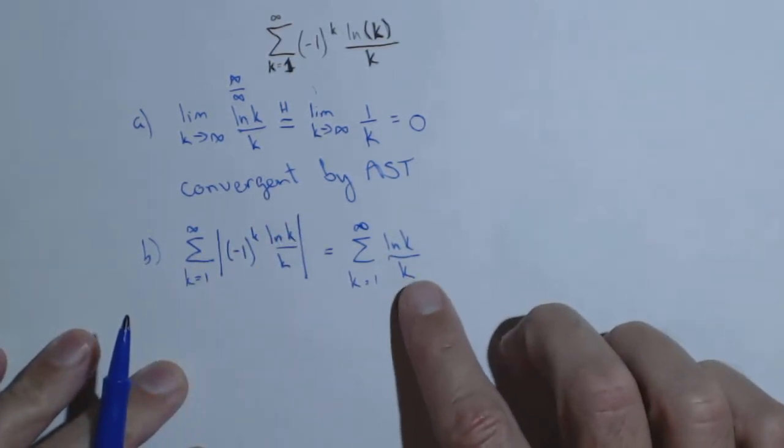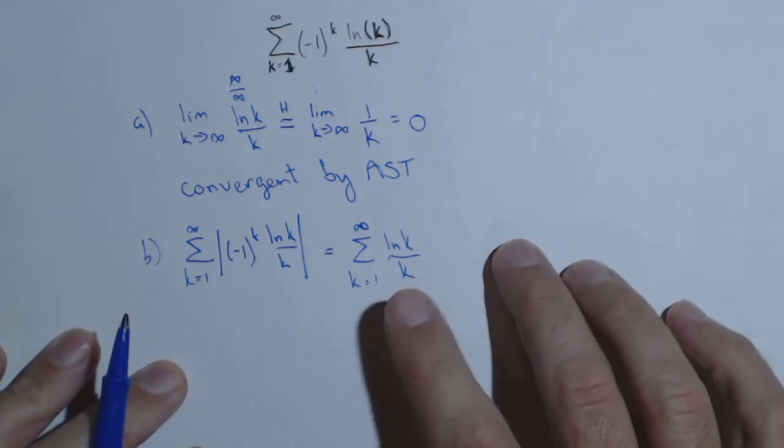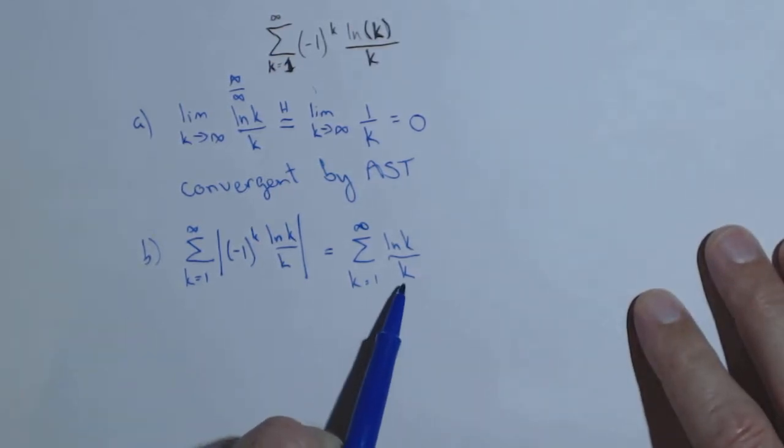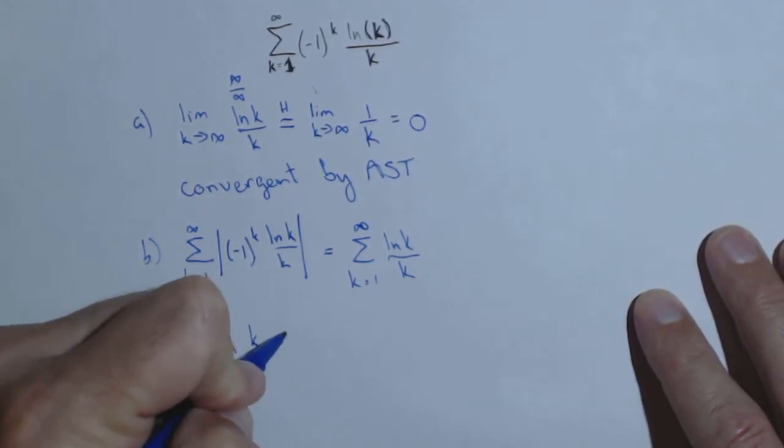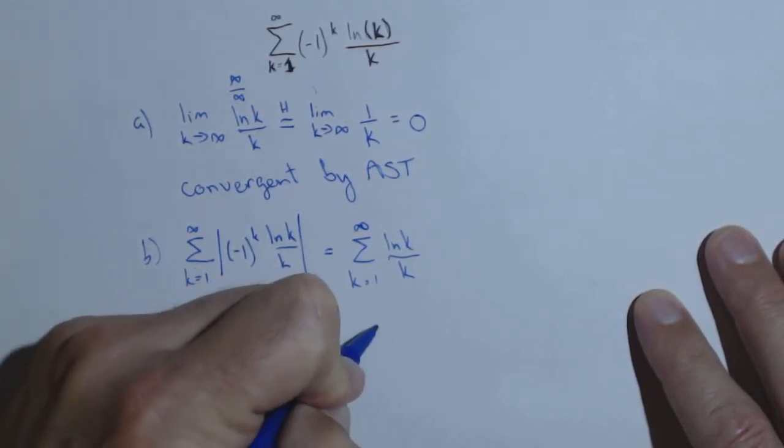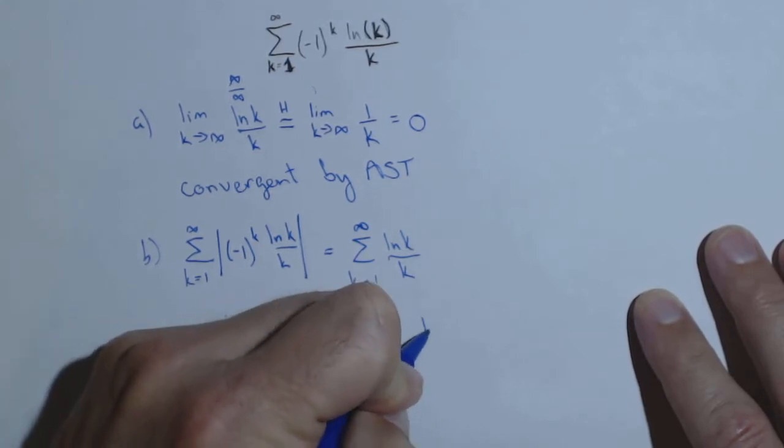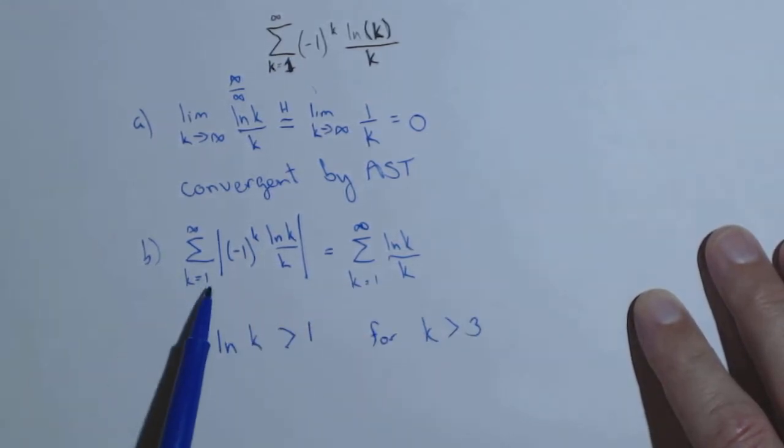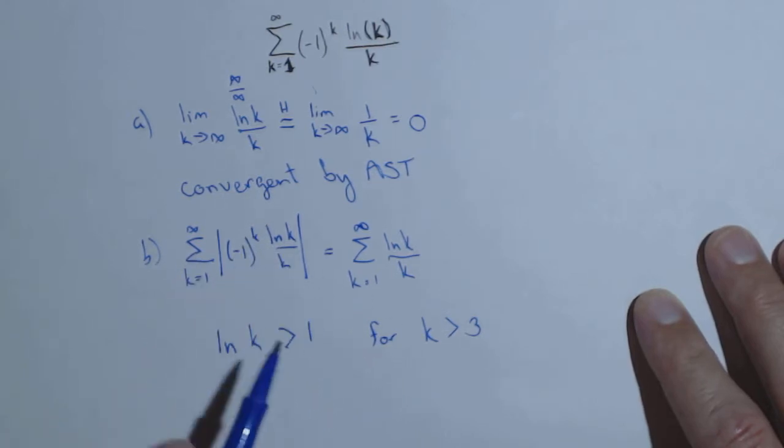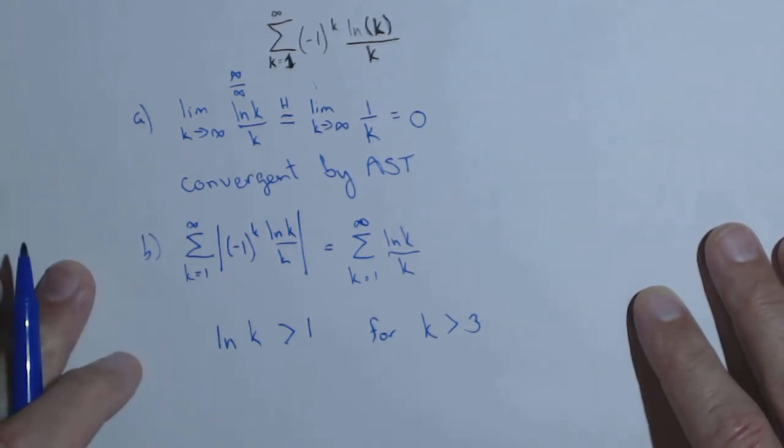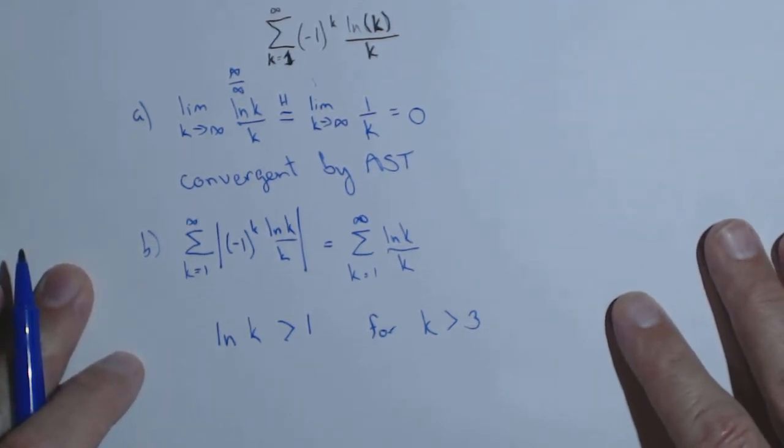So this is the series we need to test for convergence or divergence. So in looking at this one, one thing I'll notice is that ln of k is greater than one for k values greater than three. Now I know we're doing from one to infinity, but what we care about is the end behavior. So I can separate to a partial sum from one to two and then from three to infinity and see what happens from the three to infinity part. I'll do that in my conclusion so you can see what I mean.